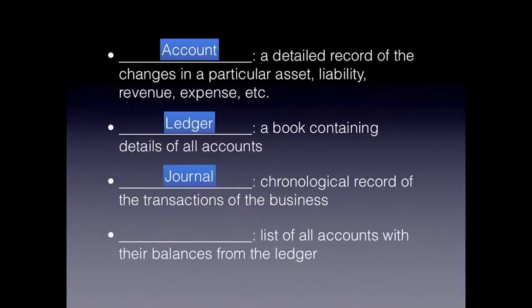We typically journalize transactions first, and then we post transactions to the ledger. The trial balance is a list of all the accounts with their balances from the ledger, and in the trial balance we want to ensure that all of our debit balances equal our credit balances.